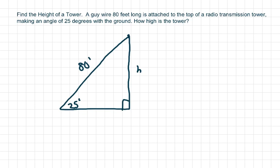Hi, this is another guy wire problem. In this case, we're finding the height of a tower. This is your guy wire right here—it's a cable rope that helps keep the tower from swaying.